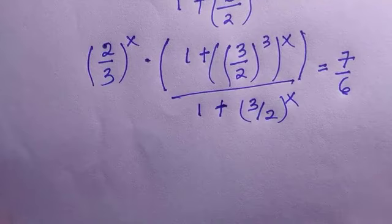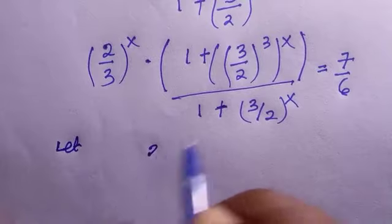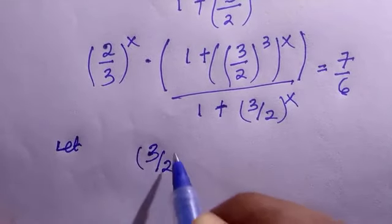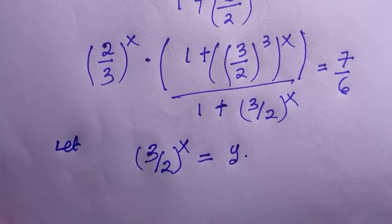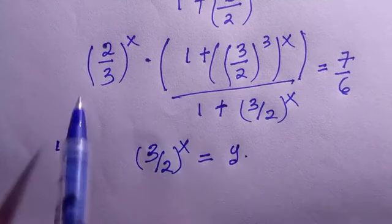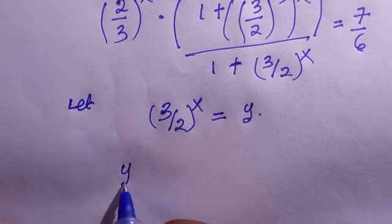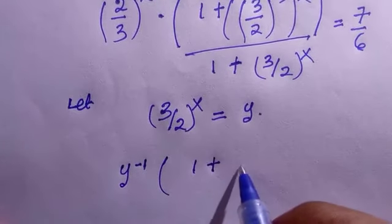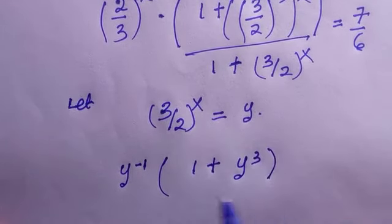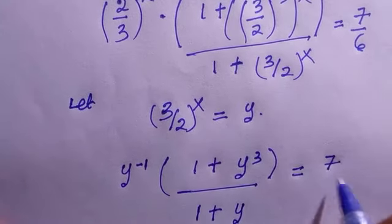Since we have 3 divided by 2 common, I will let it be an alphabet to make things easy to handle. Let 3 over 2 raised to power x equal y — any instance I see it, I will replace it with y. We also note that 2 over 3 raised to power x is entirely different, so to handle that we raise it to the power of minus 1, making it look the same. So the equation becomes 1 plus y raised to power 3, divided by 1 plus y, equals 7 divided by 6.